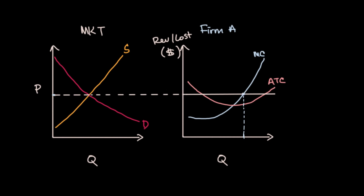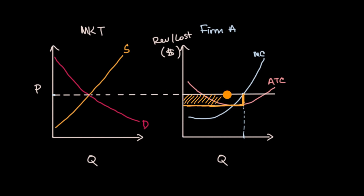We can see the economic profit this way: at this quantity, this is the average total cost, and that is the marginal revenue. You get this much per unit — the height of the gap — and then you multiply that times the number of units. So the area of this rectangle is that positive economic profit that this firm will have.